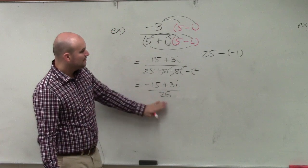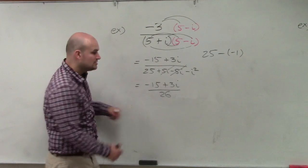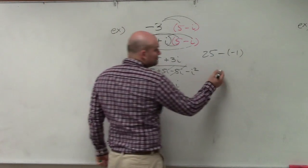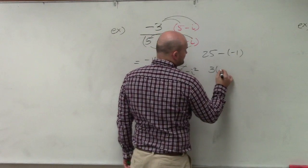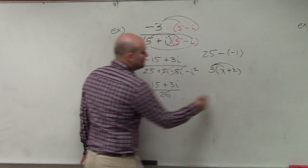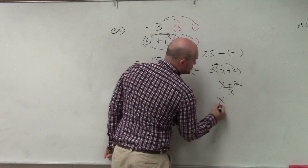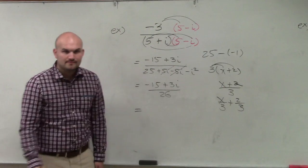Now this is fine, but is it in the form a plus bi? No. So we always want to make sure we write it in the form a plus bi. Remember, just like distributive property, 3 times x plus 2, you distribute. So if I had x plus 2 over 3, you distribute that 3. Same thing.